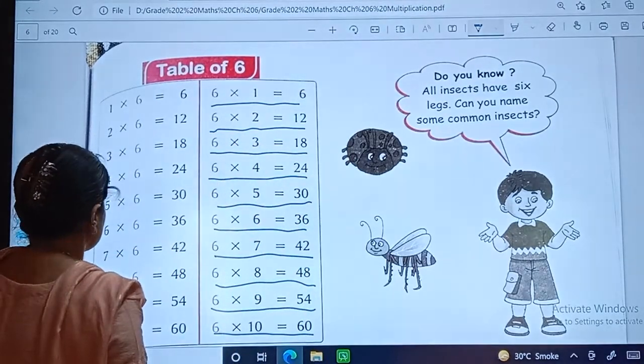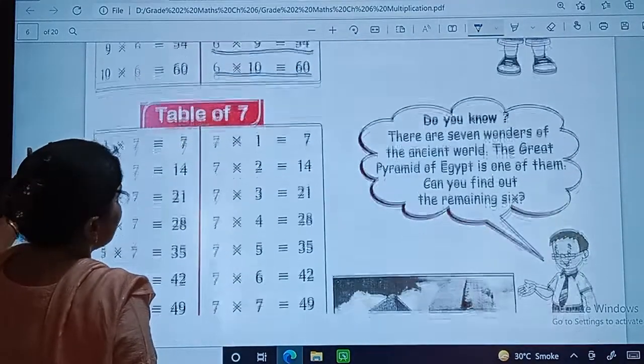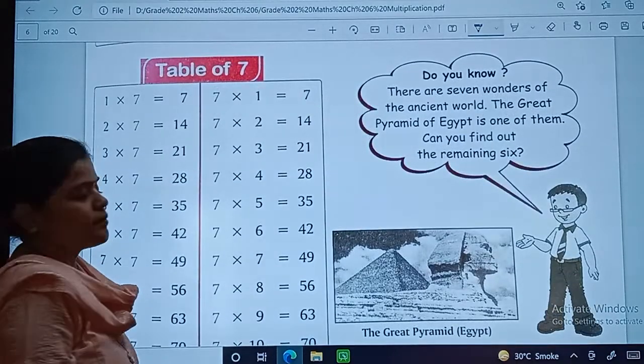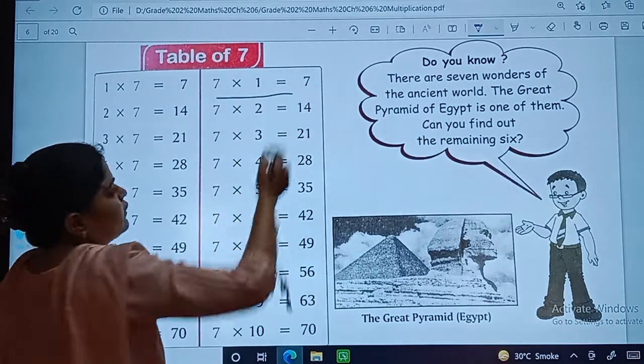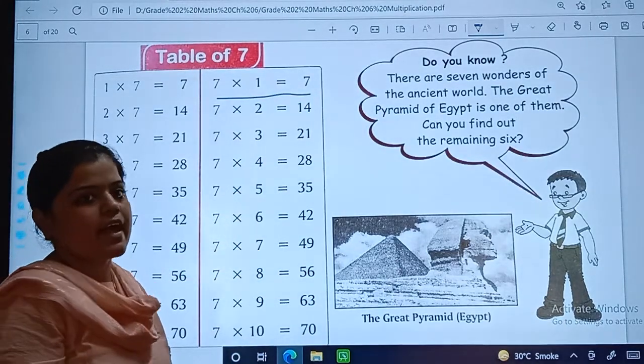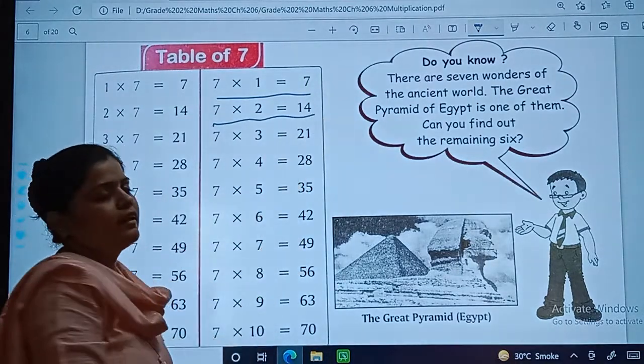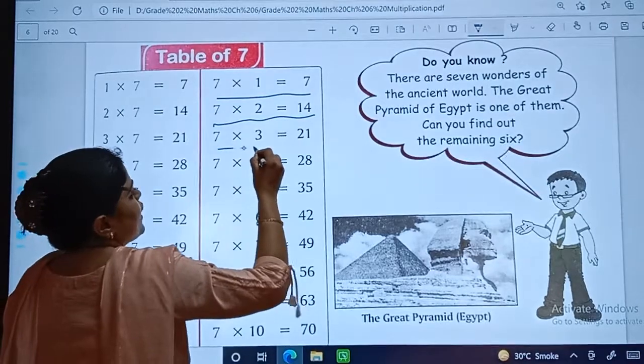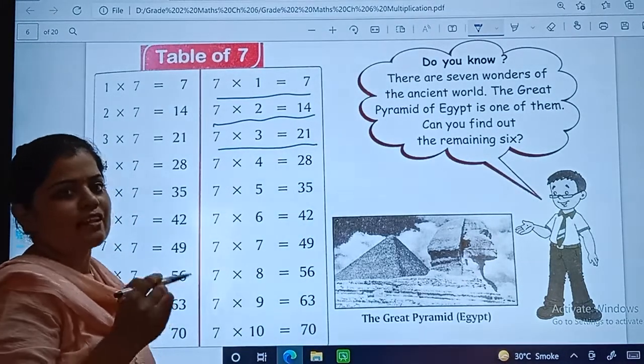Ok dear students, so let's do table of 7. Ready? Start. 7 ones are 7. 7 twos are 14. 7 threes are 21.